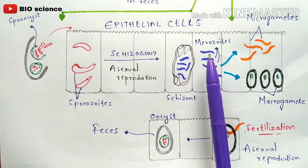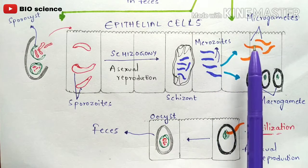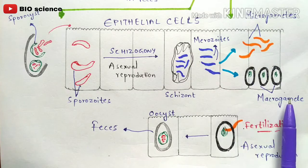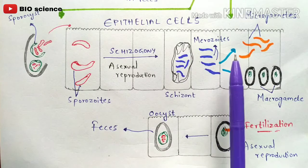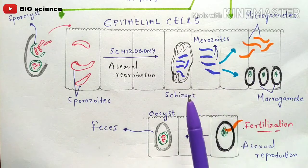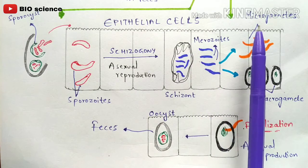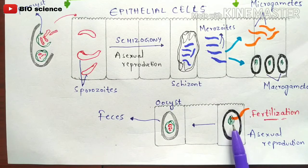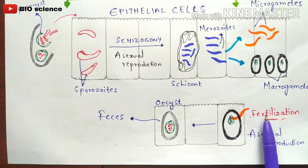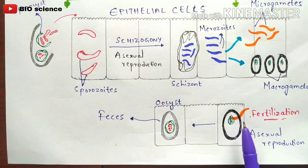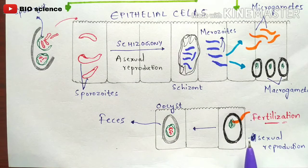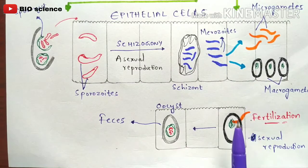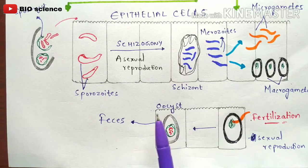The merozoites shown in blue get released by the rupturing of the schizont, and these merozoites develop into microgametes as well as macrogametes. Microgametes are considered male individuals and macrogametes are considered female individuals. Then the fertilization of microgametes and macrogametes takes place — this is the sexual reproduction process. After fertilization, a zygote is formed, which is nothing but an immature oocyst.